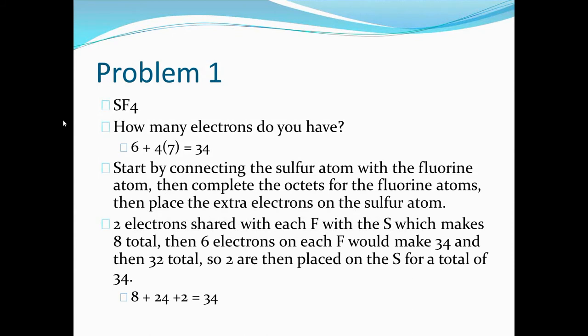Let's jump right into it. Sulfur tetrafluoride has 34 electrons because fluorine has seven electrons each and sulfur has six. So seven times four plus six like the equation you see there is 34. Start by connecting the sulfur atom with the fluorine atoms, completing the octets with fluorine atoms, then place the extra electrons on the central sulfur atom.